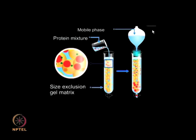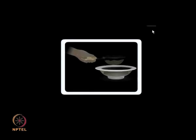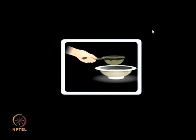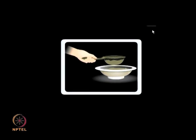Solvents or buffer systems are often used in other types of chromatography. Effluent sample fractions: the solution leaving the column is collected in suitably sized fractions; initial fractions contain only the mobile phase, while latter fractions have purified proteins. This process is analogous to separating small particulate matter from food grains using a sieve — gel filtration is also commonly referred to as molecular sieve.